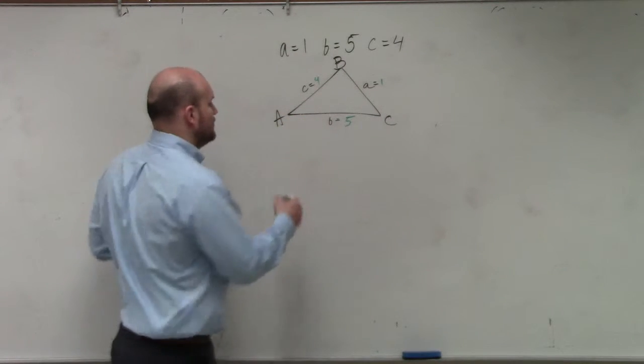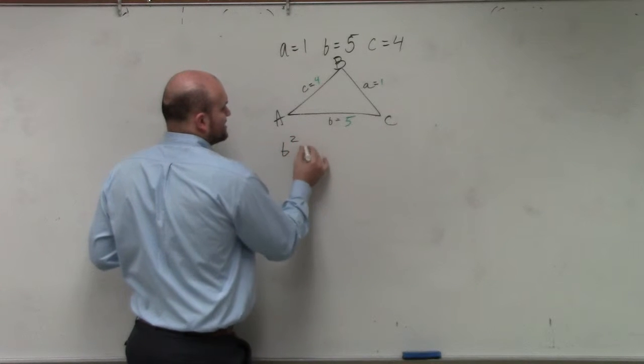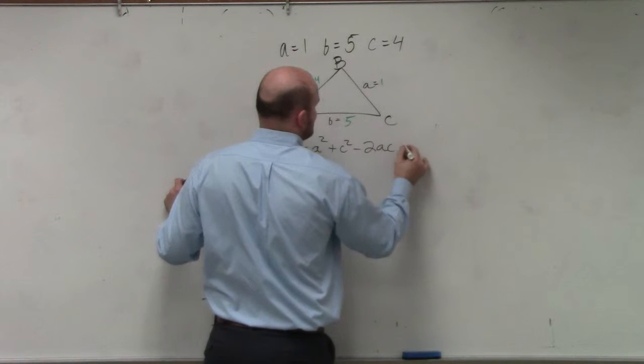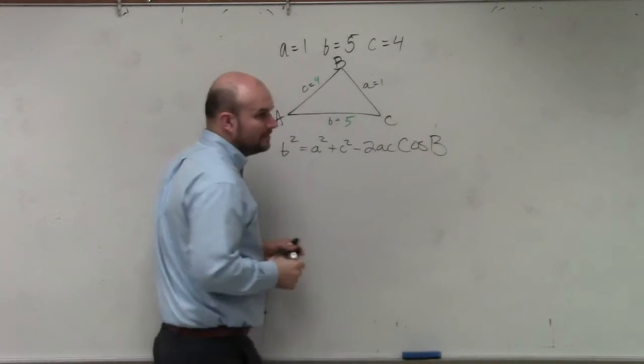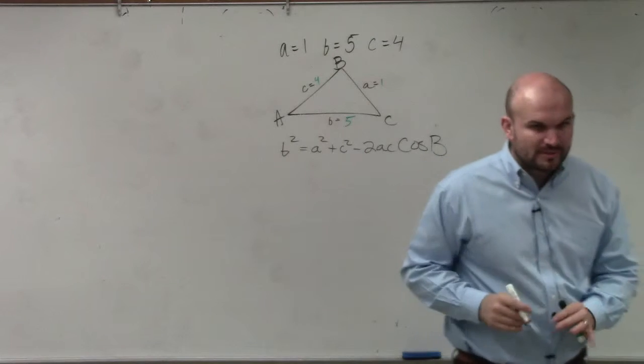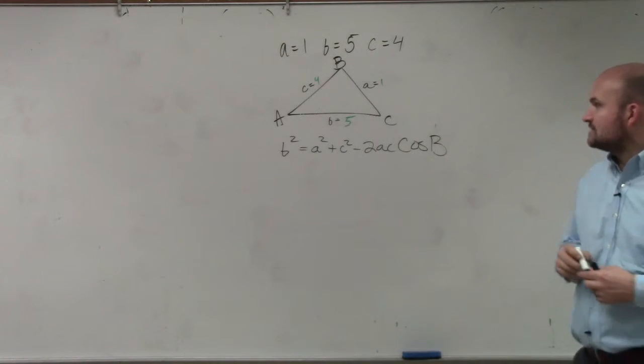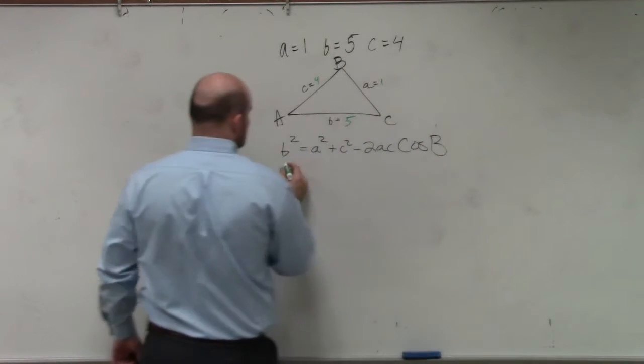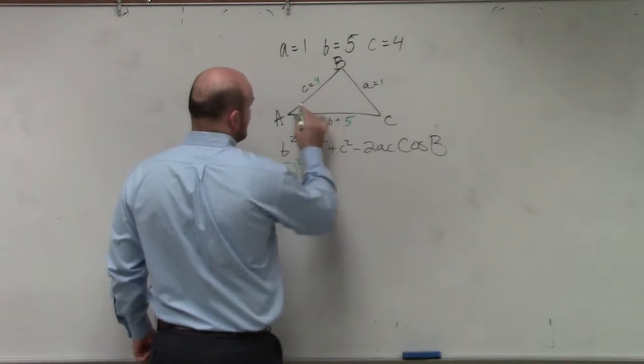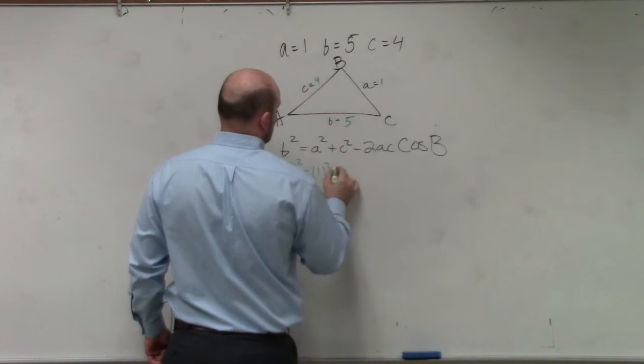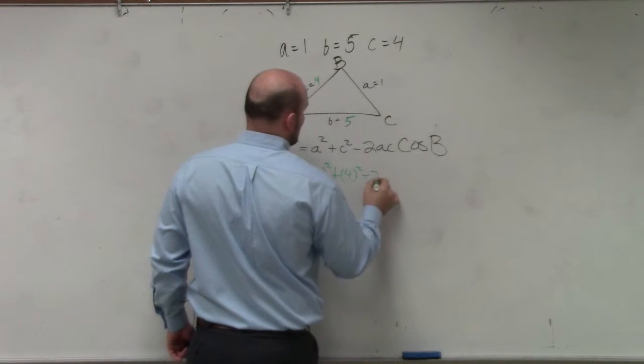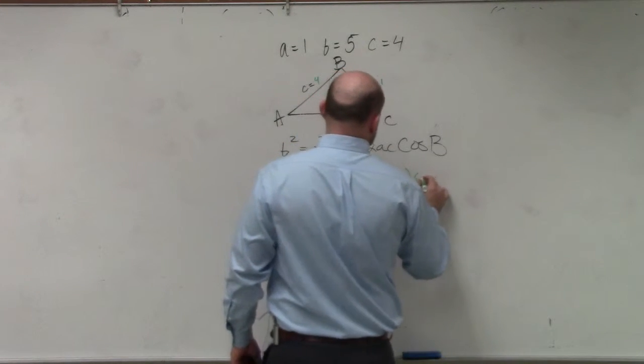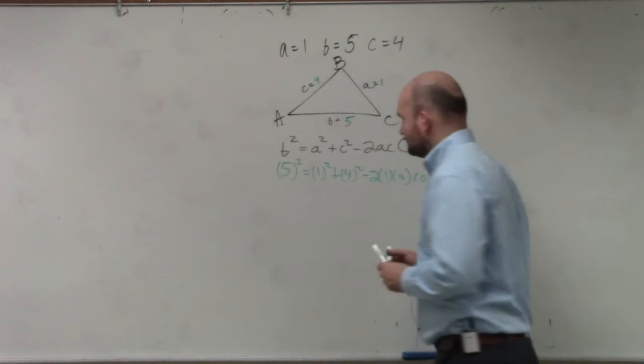So going back to knowing your formula, which will be provided, the law of cosines is b squared equals a squared plus c squared minus 2 times a times c times the cosine of b. Again, you will be provided the formula for your test, but you should at least know that and know how to rewrite it for different forms. Now, we just plug in our information that we understand. So I have 5 squared equals a squared plus c squared minus 2 times a times c times the cosine of b, which we do not know.